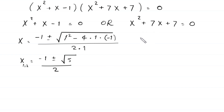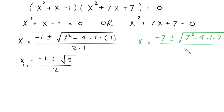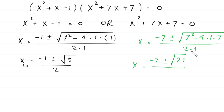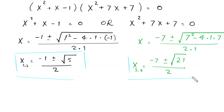Now we solve x squared plus 7x plus 7 equals 0. Using the quadratic formula, x equals negative 7 plus or minus the square root of 7 squared minus 4 times 1 times 7, divided by 2. That gives x equals negative 7 plus or minus the square root of 49 minus 28, which is 21, all over 2. So x₃ and x₄ equal negative 7 plus or minus root 21, over 2. The four solutions for the quartic equation are negative 1 plus or minus root 5 over 2, and negative 7 plus or minus root 21 over 2.